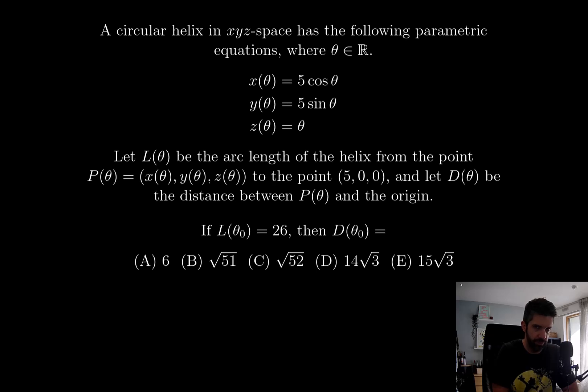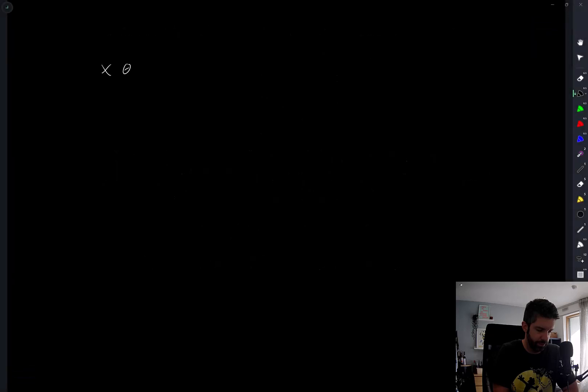I'll just write out the individual coordinates, which are already given. X of theta is equal to 5 cosine theta, Y of theta is equal to 5 sine theta, and Z theta is equal to theta.